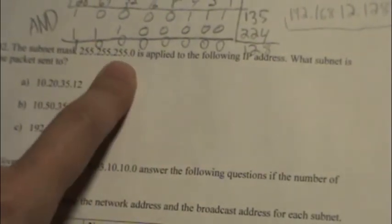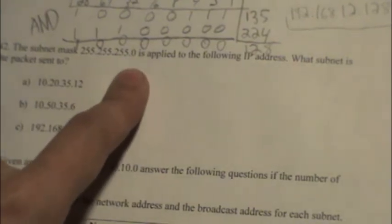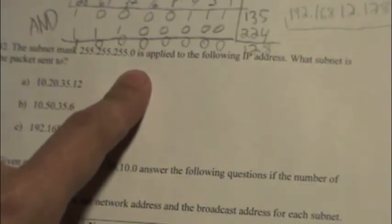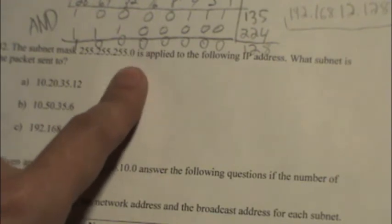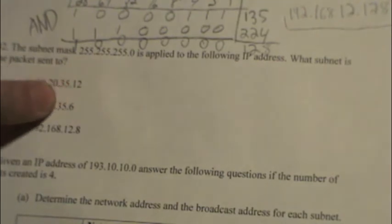You're masking everything except the last one here. You have one giant network. And as you can see from the previous question, if we make a binary representation of zero and AND it with any one of these IP addresses, the answer is going to be zero.